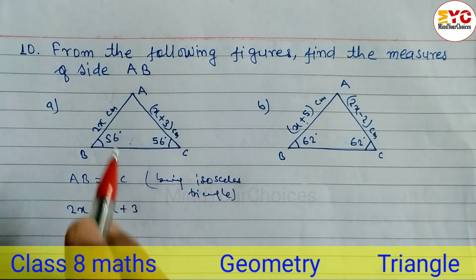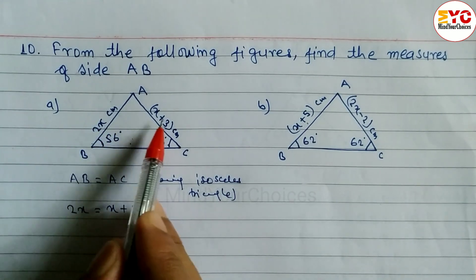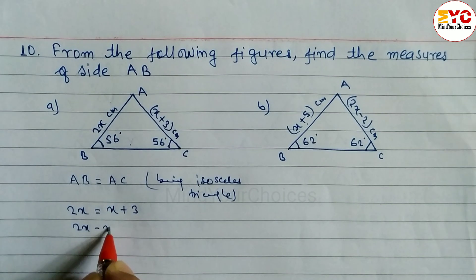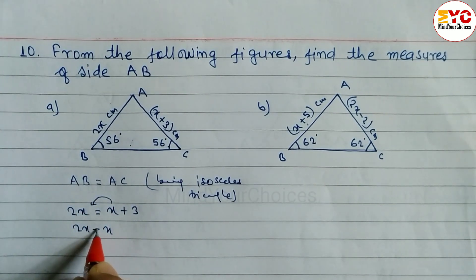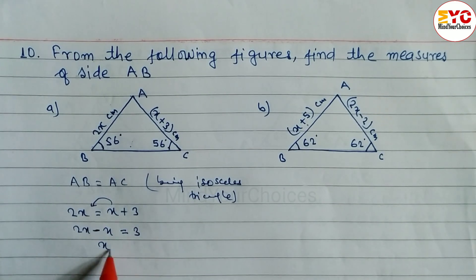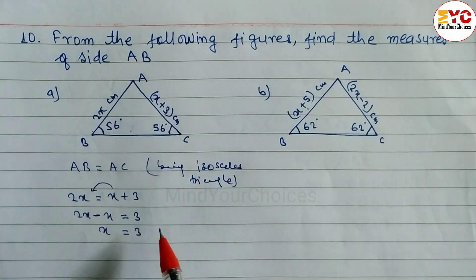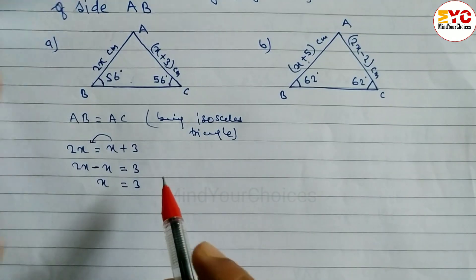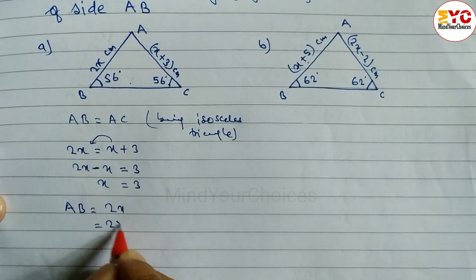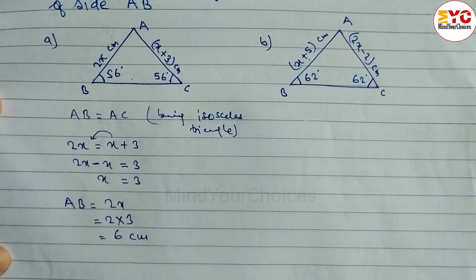If base angles are equal then two sides are also equal. Now we solve: 2x = x + 3. Taking x to the left side and changing the sign, we get 2x minus x equals 3, so x equals 3. But we have to find AB, which is 2x. So AB equals 2 times 3, which is 6 centimeters.